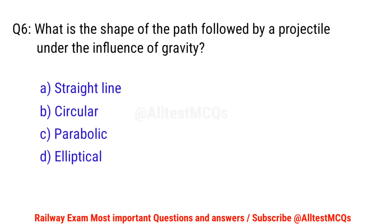Q6. What is the shape of the path followed by a projectile under the influence of gravity? D — right option is C. Parabolic.